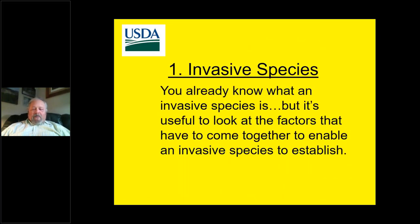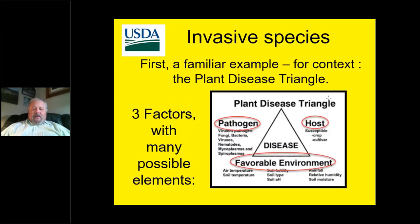Invasive species, topic number one. Now you already know what an invasive species is, but it's useful to look at the factors that have to come together to enable an invasive species to establish. Looking at the plant disease triangle, this familiar example shows that for you to have a plant disease, you typically need three factors: the presence of a pathogen, a suitable host, and a favorable environment.